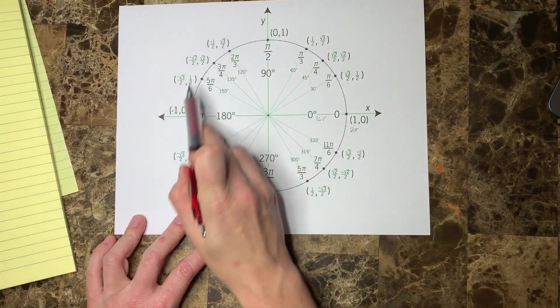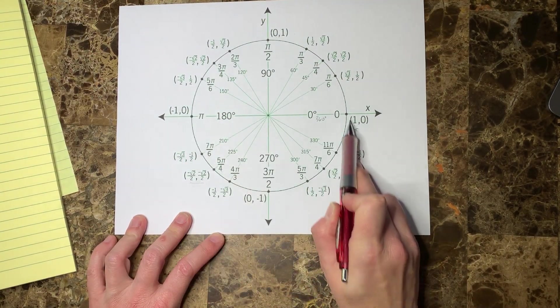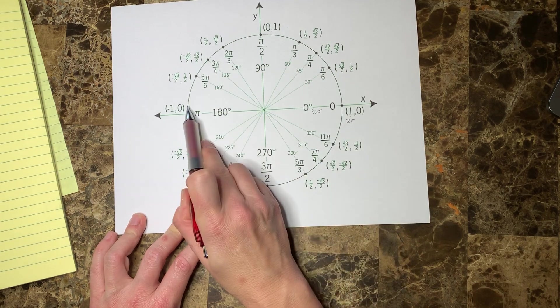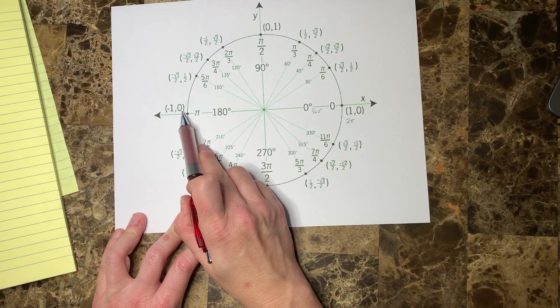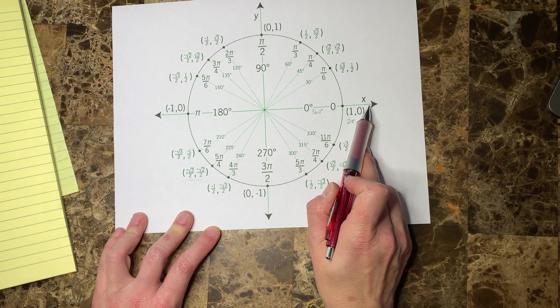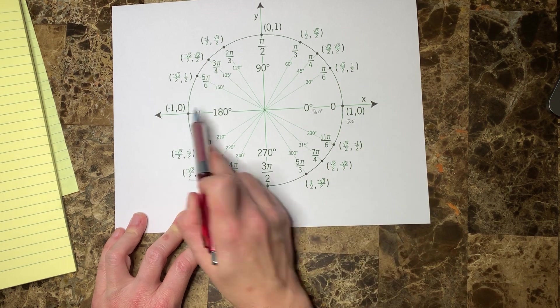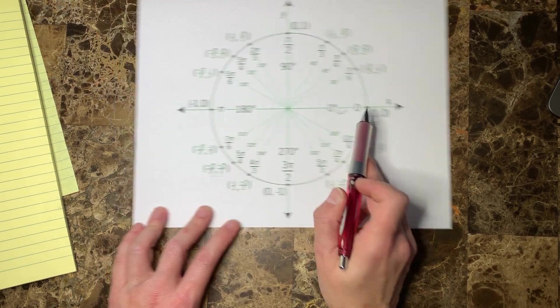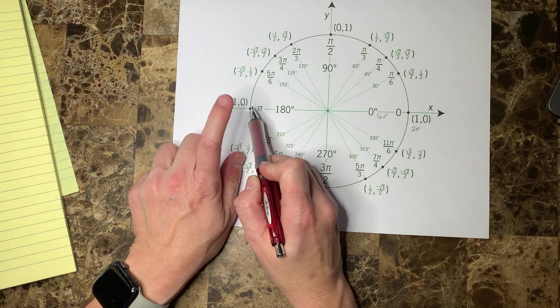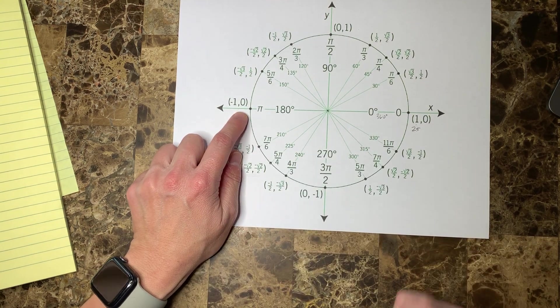181π. Let's start counting: 1π, 2π, 3π, 4π, 5π, 6π. You can kind of see that all the odds are over here and all the evens are over here. So 181π would have this ordered pair as its answer.